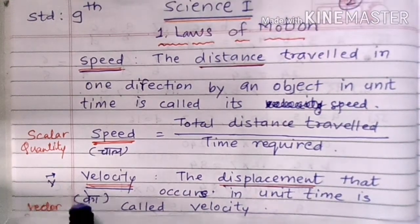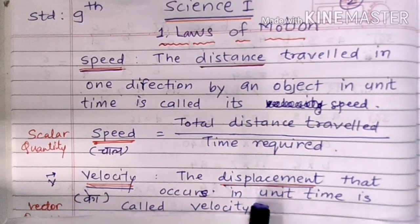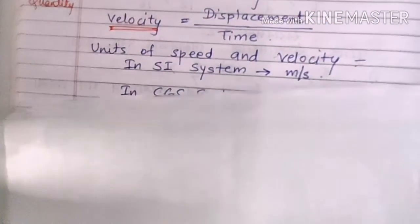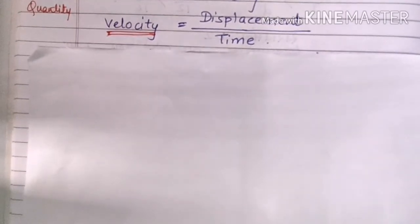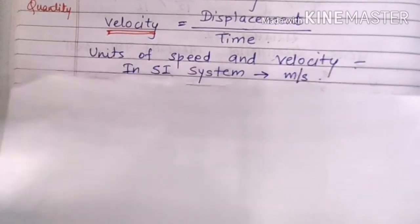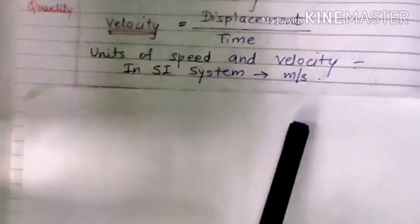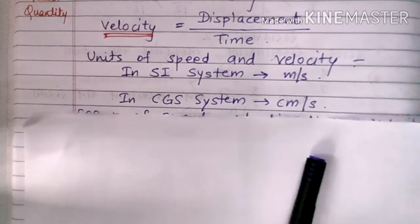Speed is related to distance and velocity is related to displacement. The formula for velocity is displacement upon time. The units of speed and velocity are the same. In the SI system the unit is meter per second, and in the CGS system it is centimeter per second.